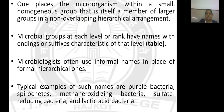One can place a microorganism within a homogenous group that itself is a member of a large non-overlapping hierarchical arrangement, and each group is called a taxonomic rank. The microbial group at each level or rank have names with a suffix which shows the characteristic of each level, so the name itself will highlight which kind of microorganism it is.